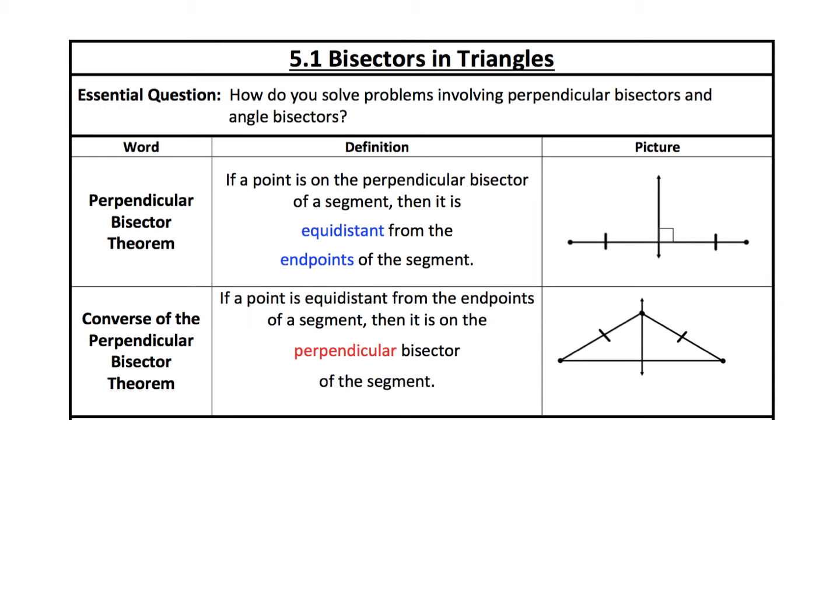Hi everyone, today I'm going to be covering lesson 5.1 on bisectors in triangles. The essential question that we'll answer is: how do you solve problems involving perpendicular bisectors and angle bisectors? Let's get started with two theorems.